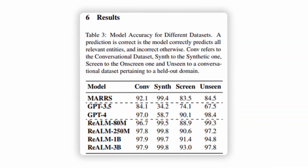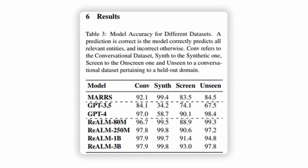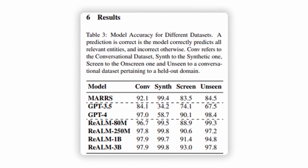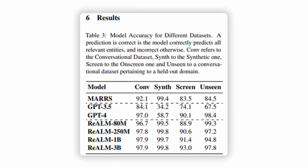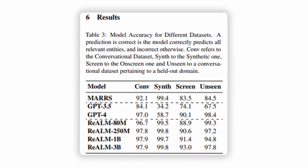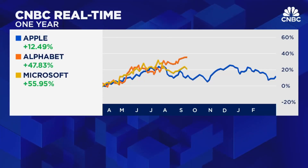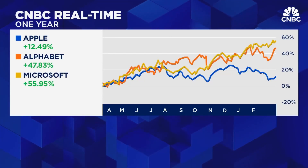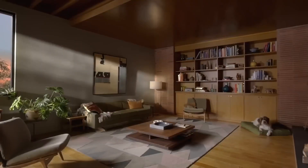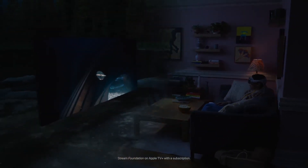The benchmarks prove that as well. Apple's model REALM beats ChatGPT in just about every reference test, as seen here. And in some metrics like synthetic data, it blows OpenAI's chatbot out of the water. So the next time you hear that Apple and Tim Cook are falling behind in the AI space, just remember — Apple is working on their own AI, and it might be way better than any AI you've used to this point. We'll just have to wait and see.